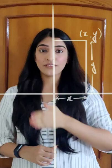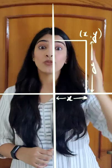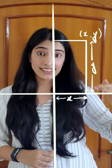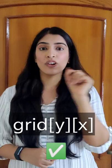Because if we see the coordinate x, it essentially denotes the distance from the y axis, which is the number of columns. And if we see the y coordinate, it denotes the distance from the x axis, which is the number of rows. So it should be grid of y, x — and not grid of x, y.